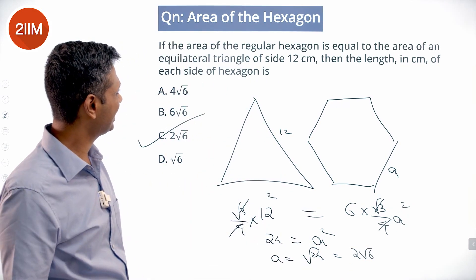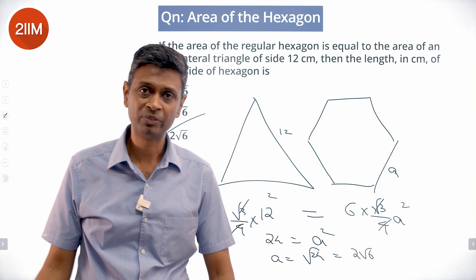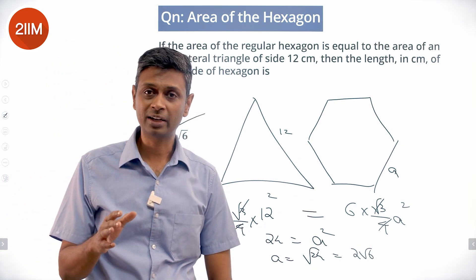Therefore, the length in centimeters of each side of the regular hexagon is 2 root 6. A regular hexagon is made of 6 equilateral triangles. That's it, done.